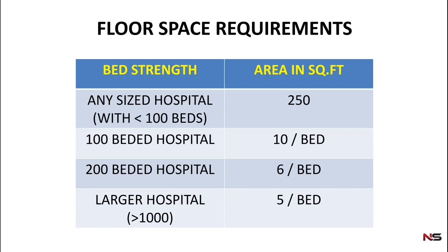Suppose a hospital has more than 100 beds but less than 200 beds, then that hospital's floor space should be 10 square feet per bed. That means for a 100-bedded hospital it should be 100 × 10 = 1000 square feet floor space. If it is a 150-bedded hospital, then the floor space will be 150 × 10 = 1500 square feet.